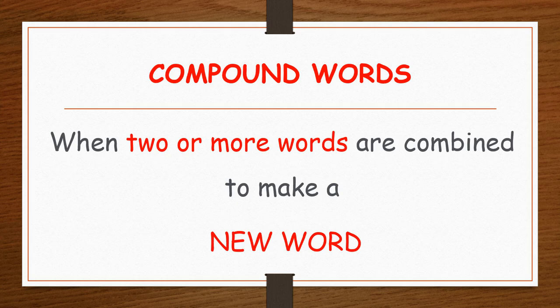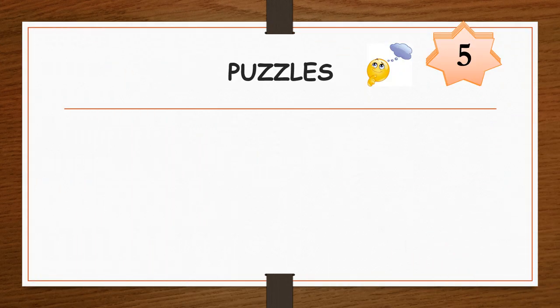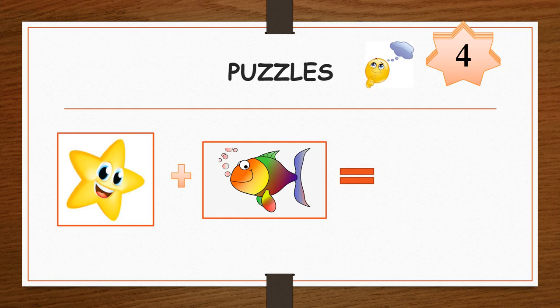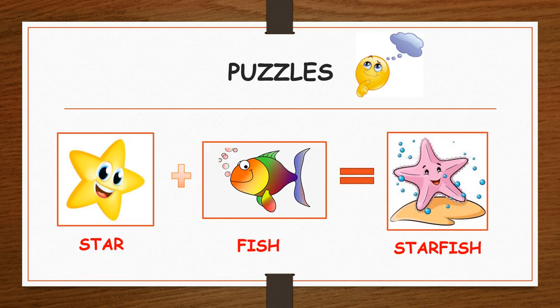So let's start the puzzle. Number one. Think. Think. Time up. Star and fish together make a compound word starfish. Starfish lives in a sea.